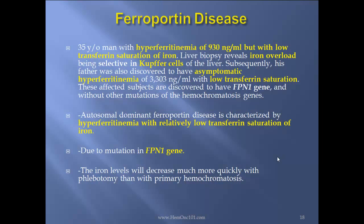Liver biopsy reveals iron overload being selective in the Kupffer cells of the liver. Subsequently, his father was also discovered to have asymptomatic hyperferritinemia of 3000 with low transferrin saturation. The affected subjects are found to have an FPN1 gene mutation without other mutations of the hemochromatosis gene. This is autosomal dominant ferroportin disease, characterized by hyperferritinemia with relatively low transferrin saturation due to mutation of the FPN1 gene. Iron levels will decrease much more quickly with phlebotomy than with primary hemochromatosis.